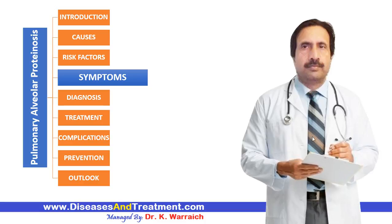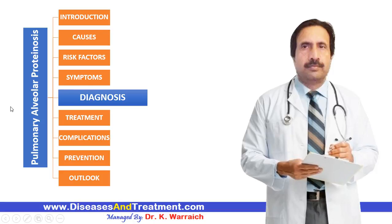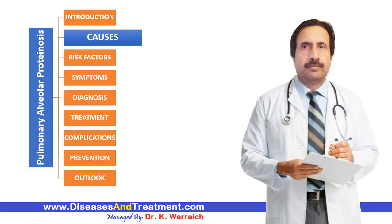Now, what are the causes? Surfactant coats the lungs, and in PAP it develops when this substance reaches abnormal levels and blocks the lung airways. This impairs the transfer of oxygen from your lungs to your blood — the lungs being the site where gas exchange occurs, where carbon dioxide is released and oxygen is absorbed. This often results in labored breathing. The exact cause is unknown, so there is no single pinpoint cause identified.